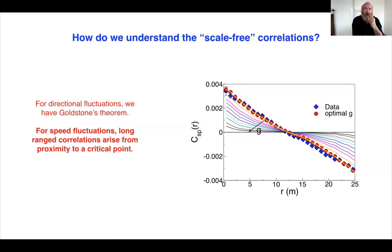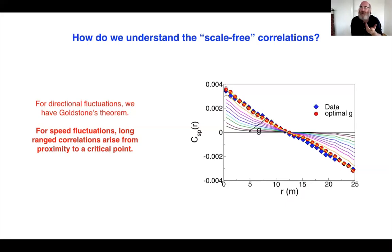If you consider higher moments - the surprise is that if you only keep track of the correlations between pairs, you actually do a very good job. If you look in the paper suggested for reading, you can predict correlations among four birds despite the fact that you only kept track of correlations between pairs of birds. It might be that you need higher order things to get things right, but it seems like you don't.